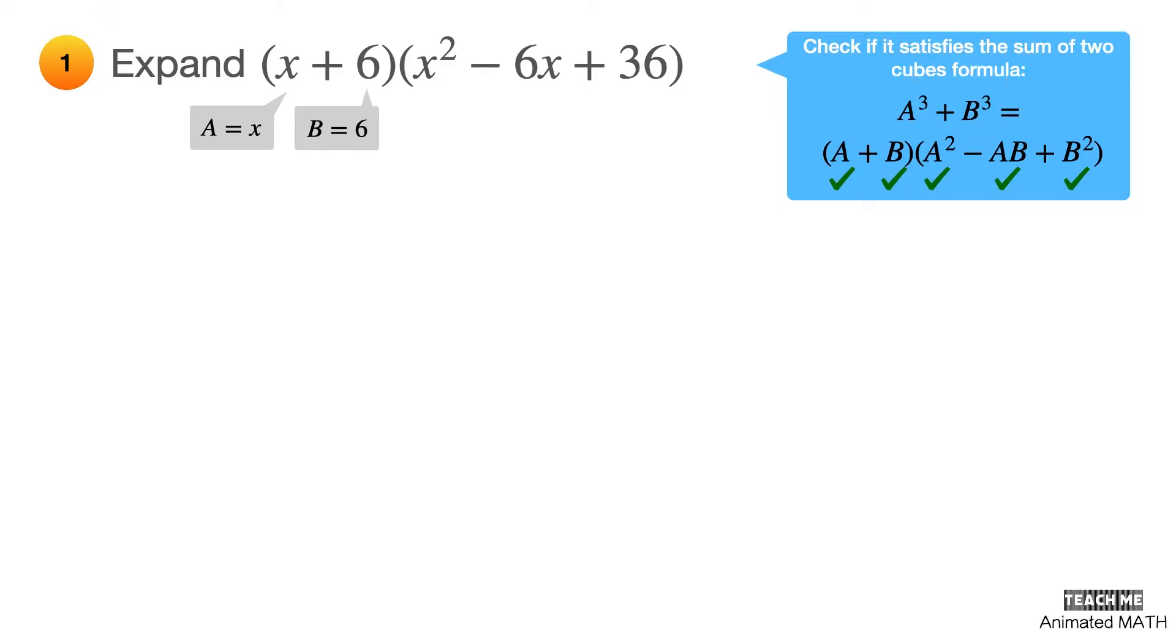Using these values, a squared is equal to x squared, ab is equal to 6x, and b squared is equal to 36. Comparing these computed values to the trinomial part of the polynomial, you can observe that the expression follows the sum of two cubes formula.